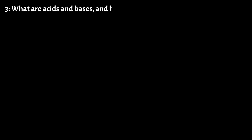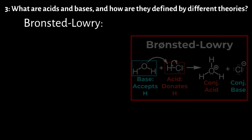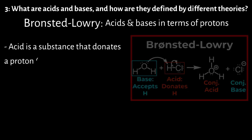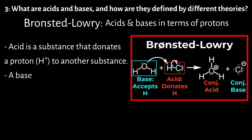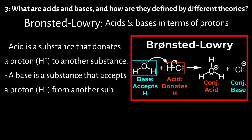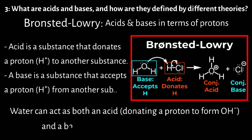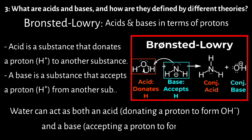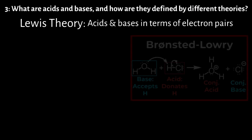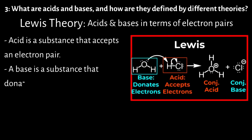Number 3: What are acids and bases and how are they defined by different theories? The Bronsted-Lowry theory defines acids and bases in terms of protons. An acid is a substance that donates a proton (H+) to another substance. A base is a substance that accepts a proton (H+) from another substance. In this theory, water can act as both an acid (donating a proton to form OH-) and a base (accepting a proton to form H3O+). The Lewis theory defines acids and bases in terms of electron pairs: an acid accepts an electron pair, and a base donates an electron pair.